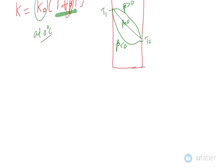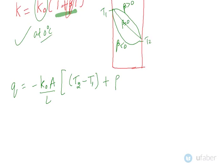When we have variable conductivity, the heat flow equation becomes: Q equals minus K0 A divided by L, times (T2 minus T1) plus beta by 2 times (T2 square minus T1 square). This is the relation for steady state heat conduction through a plane wall having variable thermal conductivity. Just remember this formula as it is.